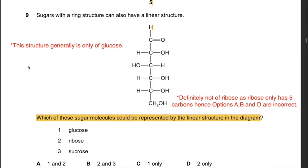Question 9: Sugars with a ring structure can also have a linear structure. Which of these sugar molecules could be represented by the linear structure in the diagram? The options are glucose, ribose, and sucrose. This is definitely not ribose as ribose has only 5 carbons, whereas the given structure has 6 carbons. Hence options A, B, and D are incorrect since they all include ribose. Therefore the answer is C: glucose only.